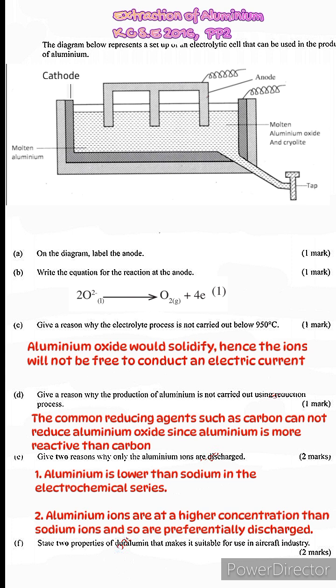Last one F. State two properties of duralumin that makes it suitable for use in aircraft industry. So point number one is that it's light and point number two is that it's stronger than pure aluminum.